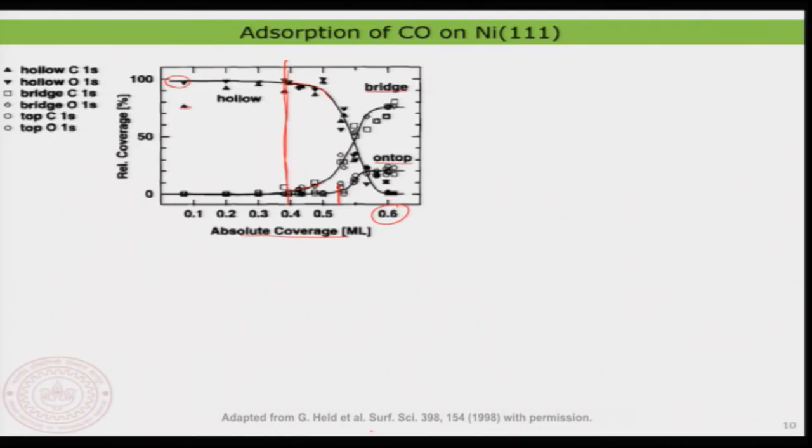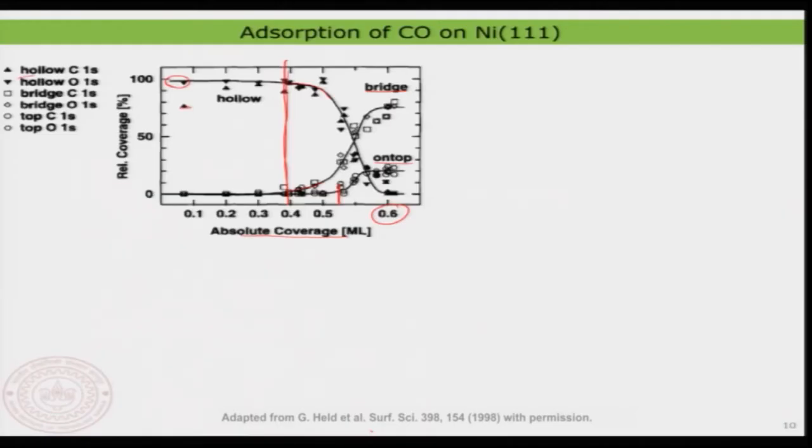At lower coverage, the HCP site is the most favorable site, indicating what the molecule prefers with respect to the surface — HCP or FCC, that is the hollow site. But when coverage increases, molecule-molecule interaction and molecule-surface interaction start to compete, pushing the system toward a more stable structure. Ultimately the bridge and on-top sites are occupied and the HCP site is completely gone.